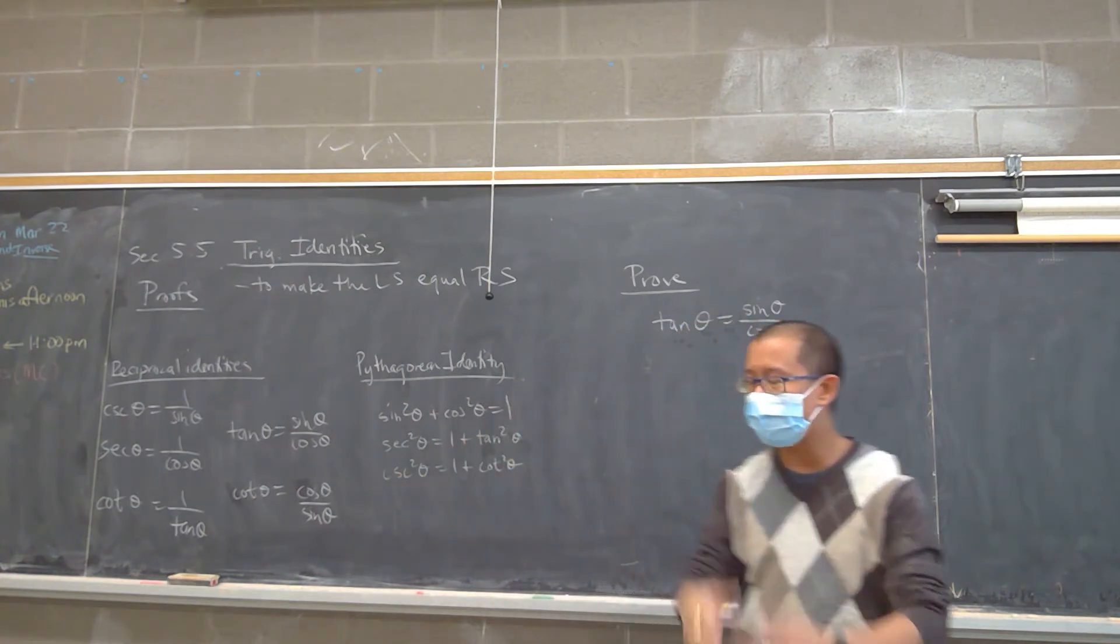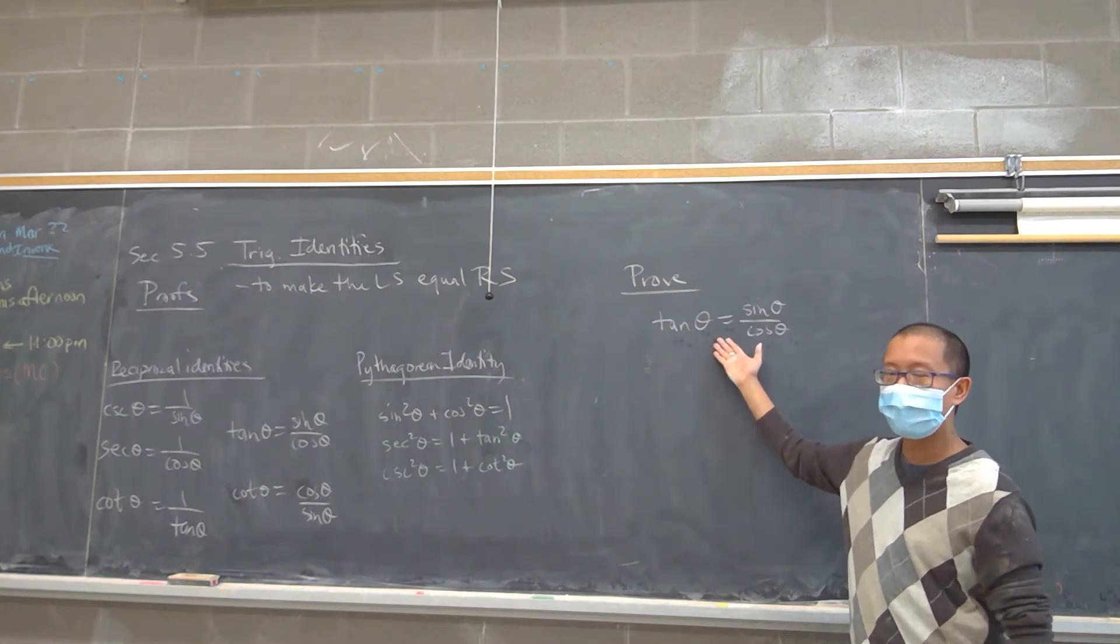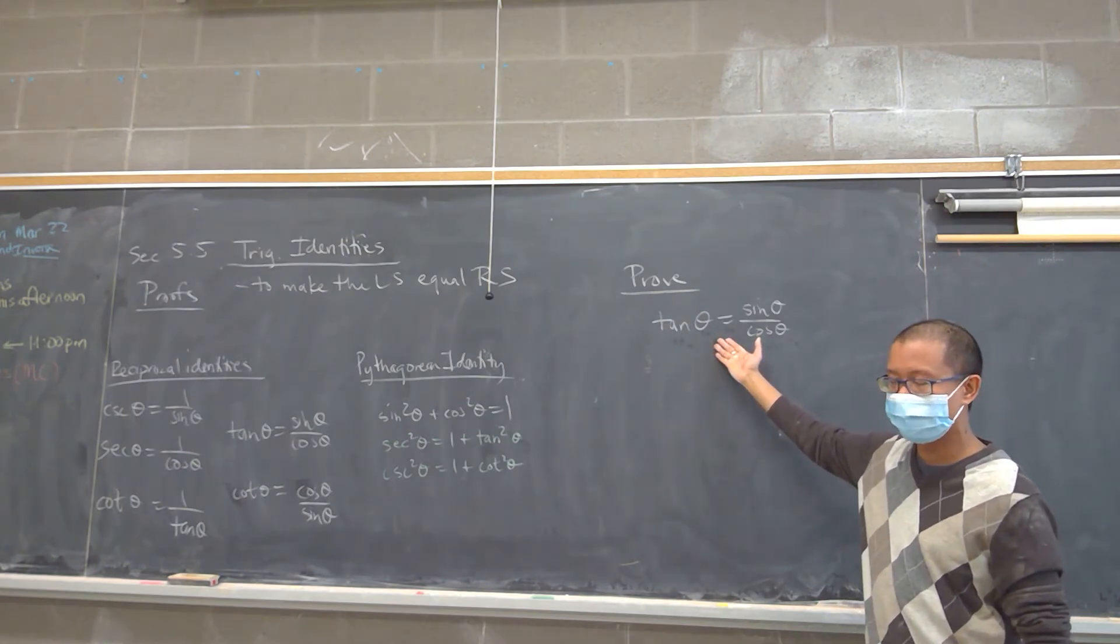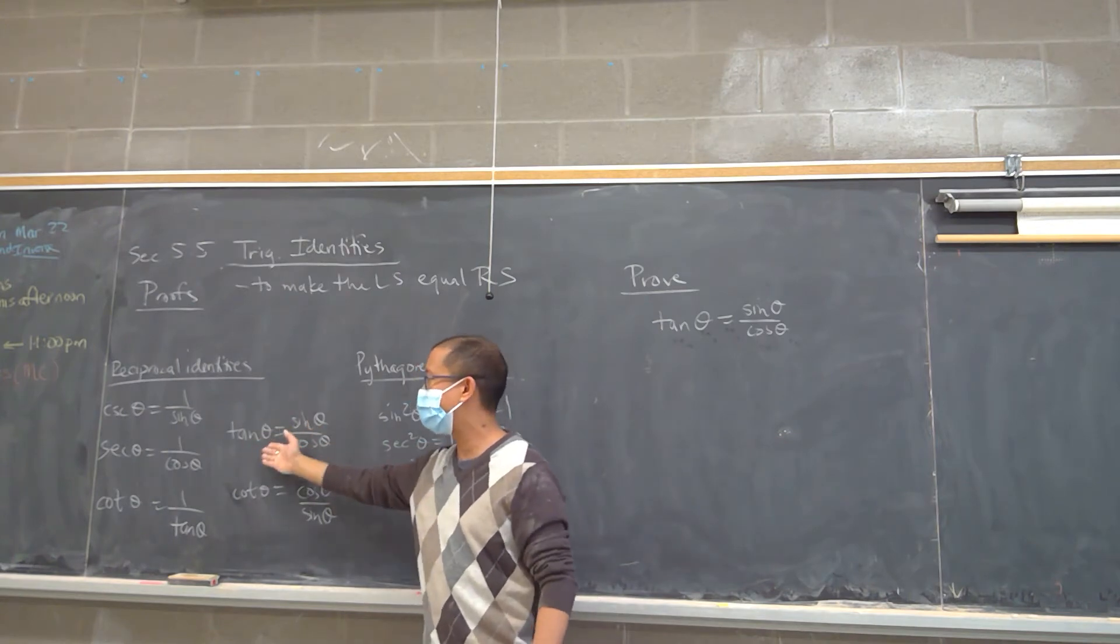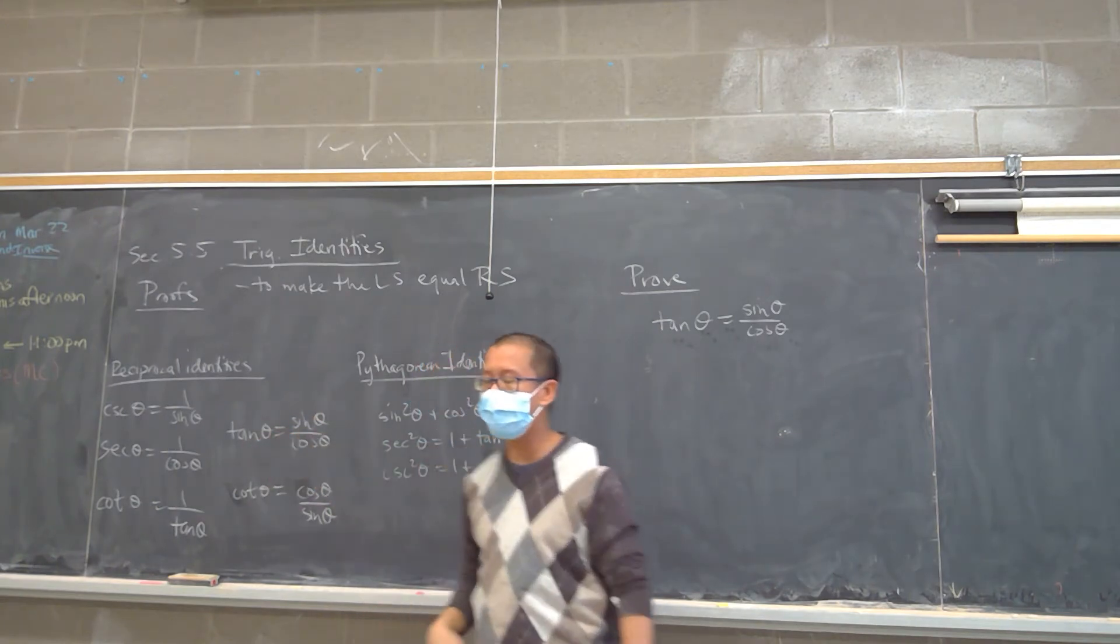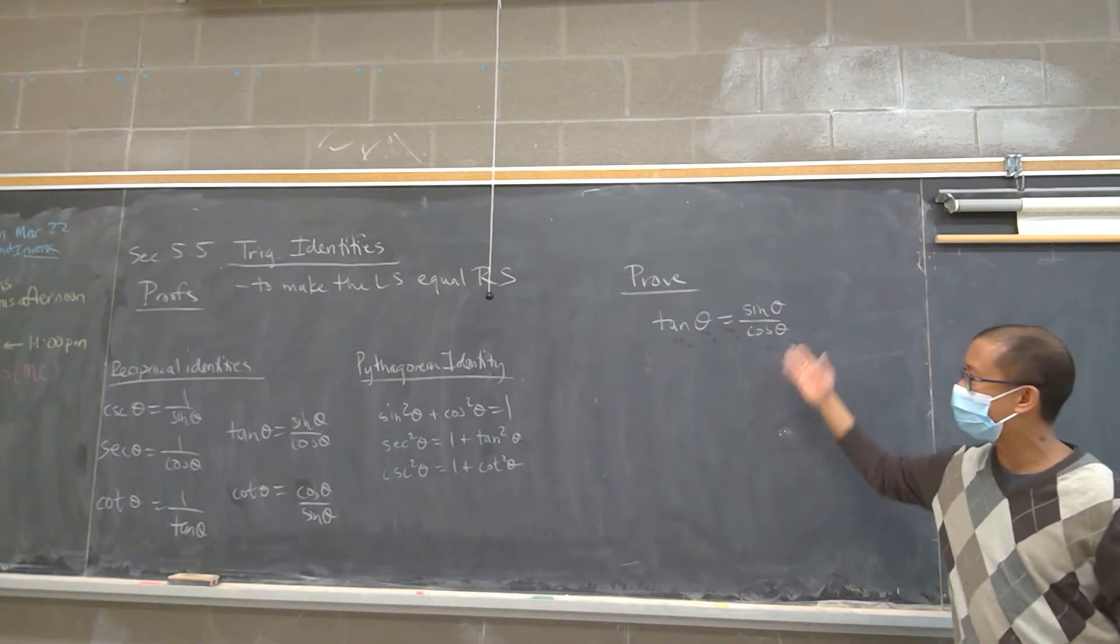Our introduction is to look at one of the identities that we want to prove, which is actually called the tangent identity. I put it with the reciprocal identities because technically it's there. By definition, tan θ is equal to sin θ over cos θ.